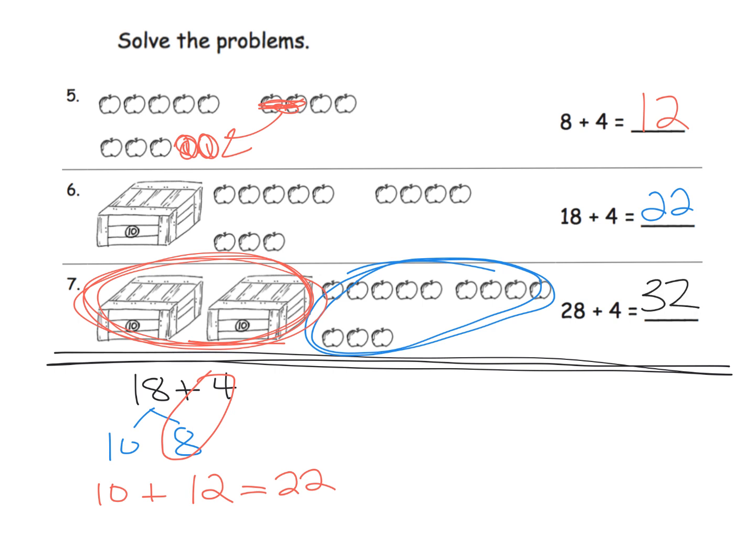Now what would that look like, kind of where are we going with this? Let's write that down. So 28 plus 4, and where we want students to go is to eventually see that 28 can be decomposed to 20 and 8. We're going to add the 8 and the 4 to get 12, add in the original 20, and that gives us 32.